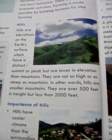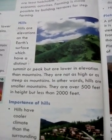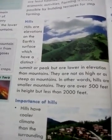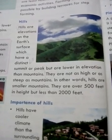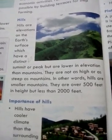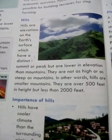Hills. Hills are elevations on the earth's surface which have a distinct summit or peak but are lower in elevation than mountains. They are not as high or as steep as mountains. In other words, hills are smaller mountains.